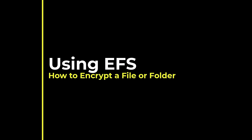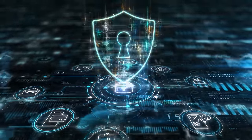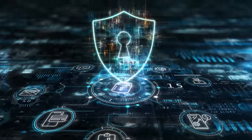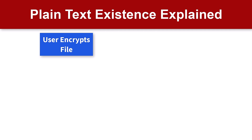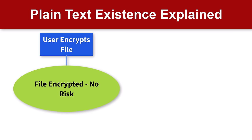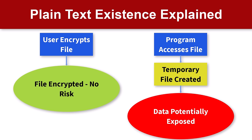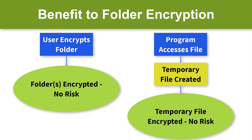Prior to deciding whether to encrypt a single file or a folder, it is important to note that from a security viewpoint, it is safer to encrypt the entire folder rather than one file. Under certain circumstances, the file's data may reside on the media unencrypted. When a file is initially encrypted, the file is encrypted in place. However, when modifying a file which has already been encrypted, some programs may create an unencrypted temporary file during the editing process. This issue can be mitigated by encrypting the file's folder rather than the file itself, so any temporarily created files will also be encrypted.